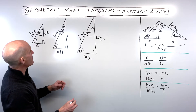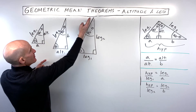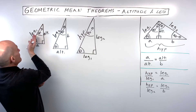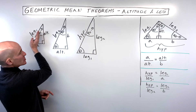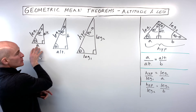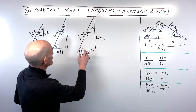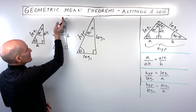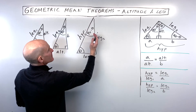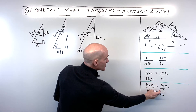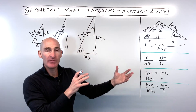For the leg theorem — leg one — compare the small triangle to the overall triangle: the hypotenuse of the small triangle matches leg one of the overall triangle, giving the proportion hypotenuse to leg one equals leg one to a. For leg two, comparing the medium triangle and the overall triangle gives hypotenuse to leg two equals leg two to b. You're just matching corresponding sides of similar triangles to make the proportions, and these formulas are simply shortcuts for that process.